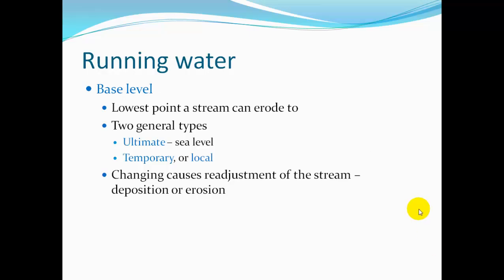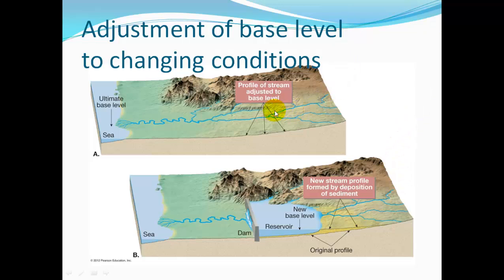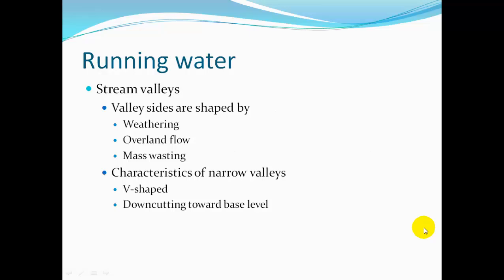Base level — streams are eroding toward a base level; their job is to flatten out the surface of the earth. There are two base levels: ultimate base level, which is sea level, and a temporary or local base level. Changes in base level cause readjustment of the stream in how it deposits or erodes to maintain balance. For example, if we build a dam to create a reservoir, instead of the stream depositing out at sea level forming a delta, it will start depositing as soon as it enters that water — its new base level — potentially filling up the reservoir with sediment and requiring dredging later.